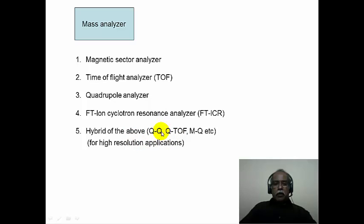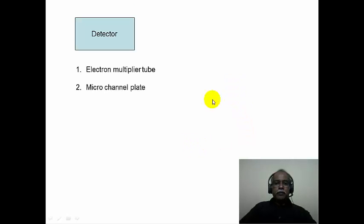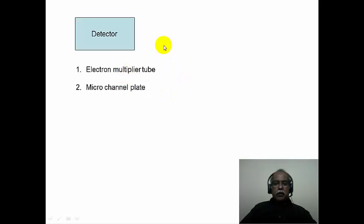For example, one can have a quadrupole-quadrupole (triple quadrupole) or a quadrupole time-of-flight analyzer. These combinations are used when high resolution is necessary. Detectors are essentially electron multiplier tubes or microchannel plates. The ions impinge on the electron multiplier tube, produce a current, and that current is registered as the signal corresponding to the mass spectrum.